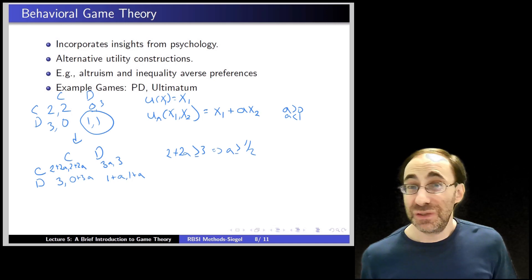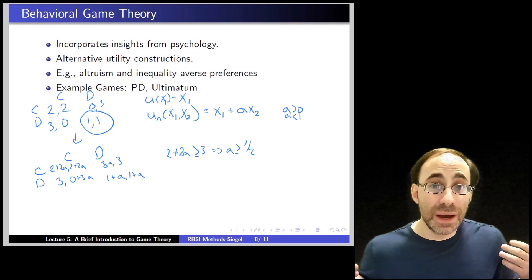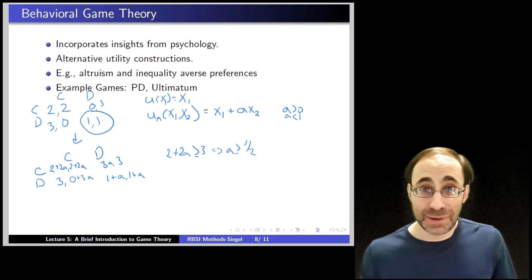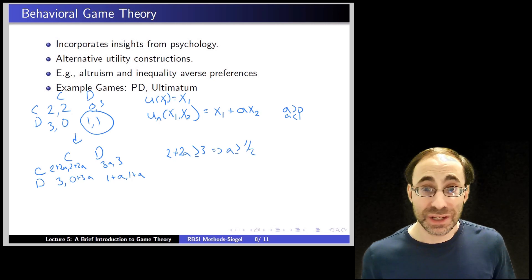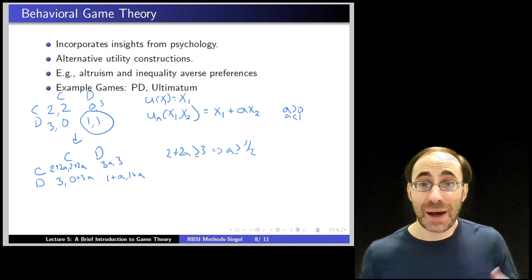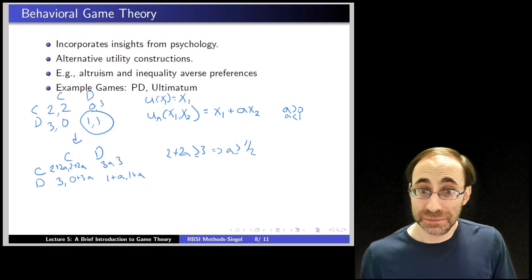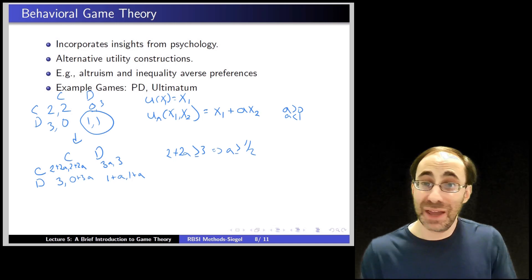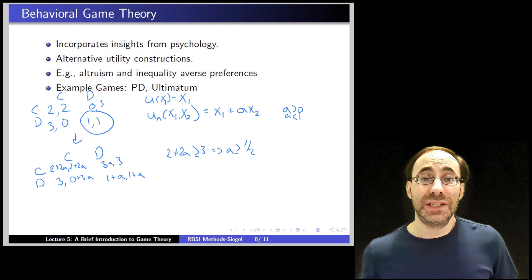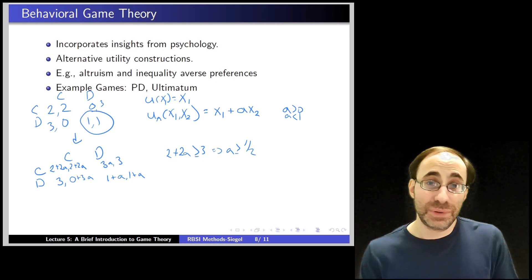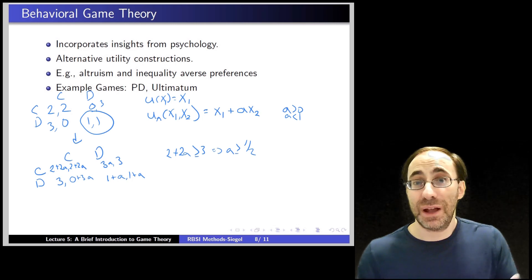In fact, if you're sufficiently altruistic in the simple altruism model, cooperation becomes a dominant strategy. This is important to note: there's nothing irrational about this in the slightest. Rational choice theory still holds. You have complete and transitive preferences represented by a utility function. You're optimizing your outcomes given constraints by maximizing your utility function. Nothing is different from rational choice theory.